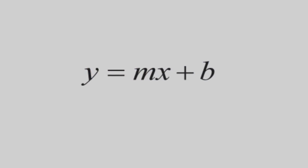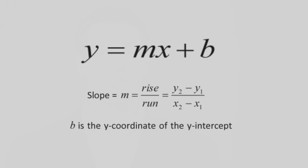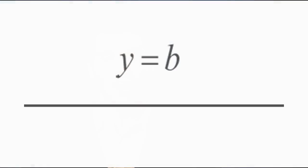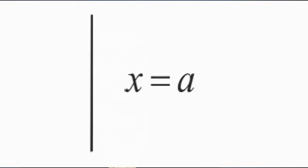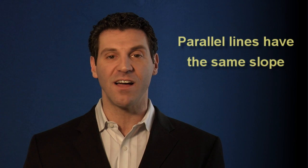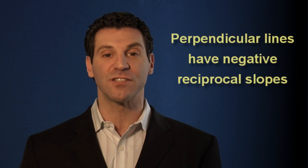In addition, you should know the slope-intercept form of an equation of a line: y equals mx plus b. Here, m is the slope of the line and b is the y-coordinate of the y-intercept, where the line hits the y-axis. As a special case, a horizontal line has an equation of the form y equals b, and a vertical line has an equation of the form x equals a. Also, parallel lines have the same slope, and perpendicular lines have slopes that are negative reciprocals of each other. See strategy 28 in the 32 Most Effective SAT Math Strategies for several SAT problems using these formulas.